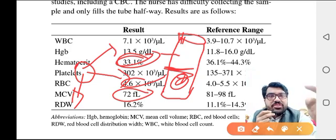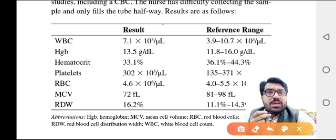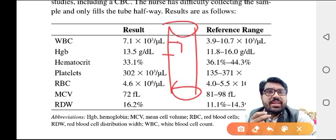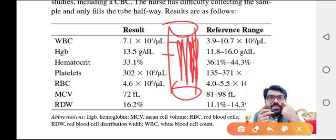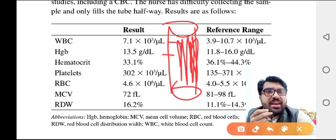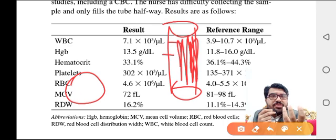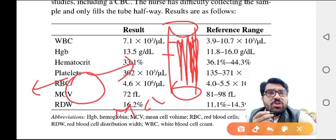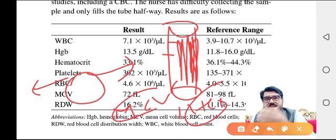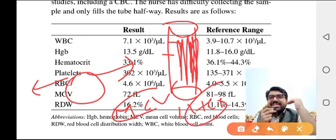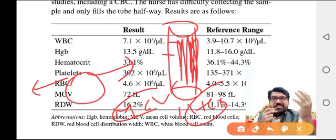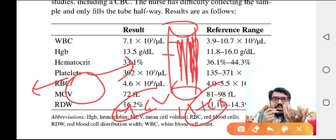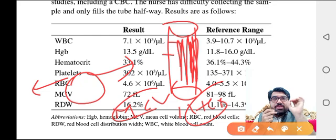Now, if you take more blood than the mark in the EDTA tube: in this case, the EDTA becomes diluted — its concentration falls. The diluted EDTA cannot maintain the RBCs in their normal size or shape. As a result, the RBCs swell — the MCV becomes higher than normal. If MCV is more, hematocrit is also more. This creates a spurious macrocytosis artifact.